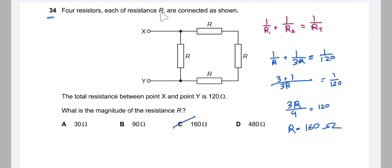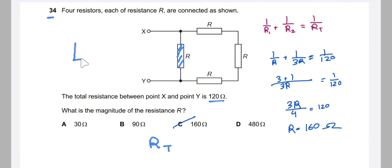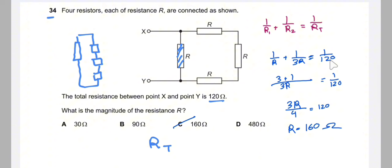Question 34: four resistors each of resistance R are connected. For the parallel combination: 1/R_total = 1/R₁ + 1/R₂. Considering one resistor R as R₁ and three in series (3R) as R₂: 1/R_total = 1/R + 1/(3R). Solving this equation with the given total resistance yields R = 160 Ω. The answer is C.